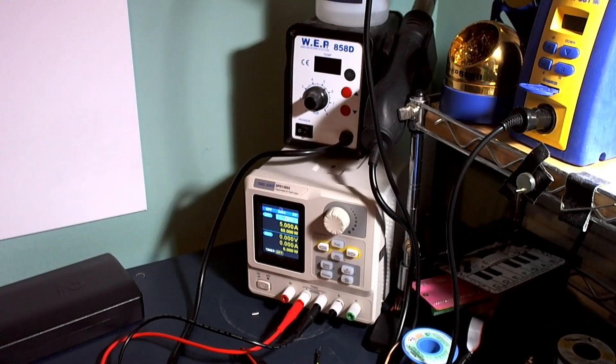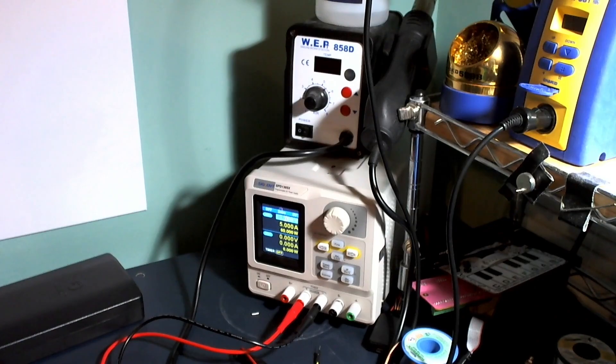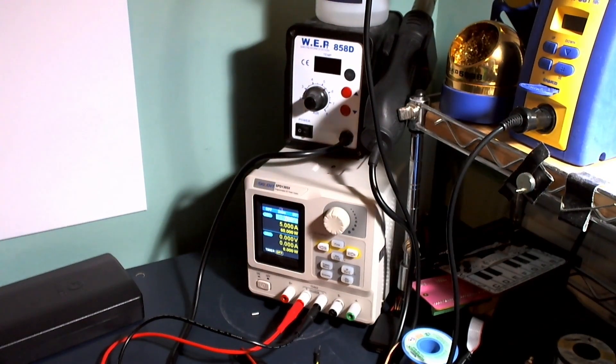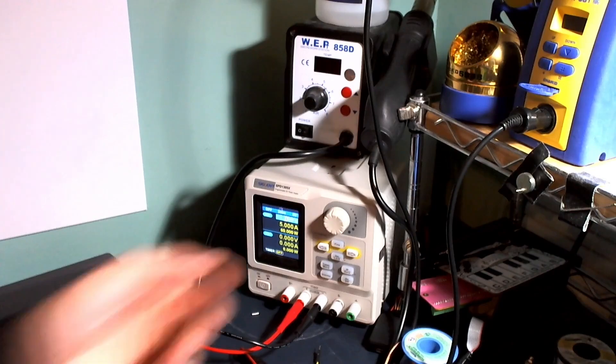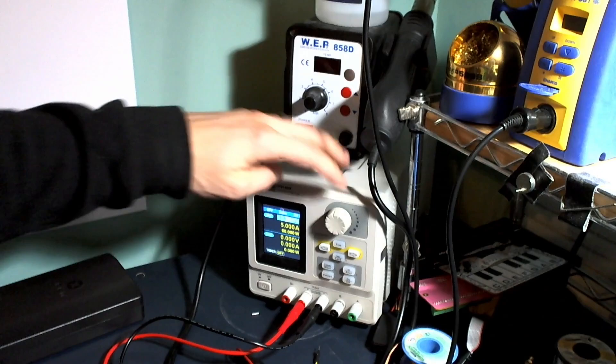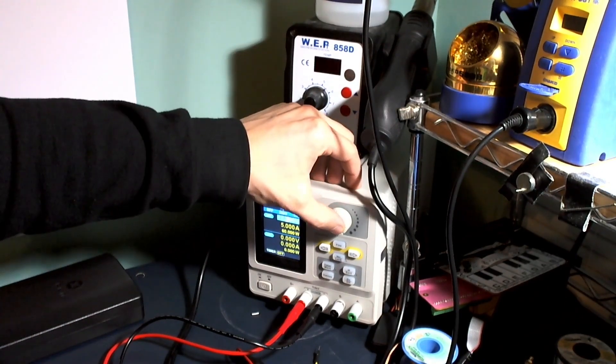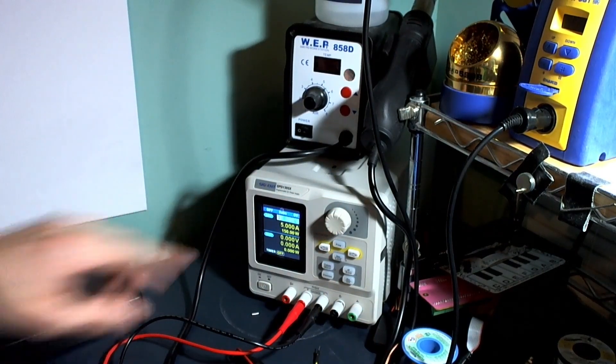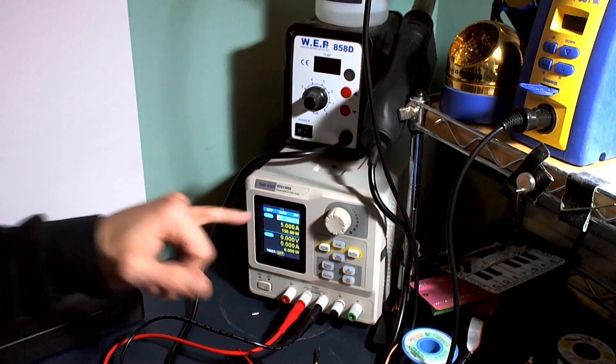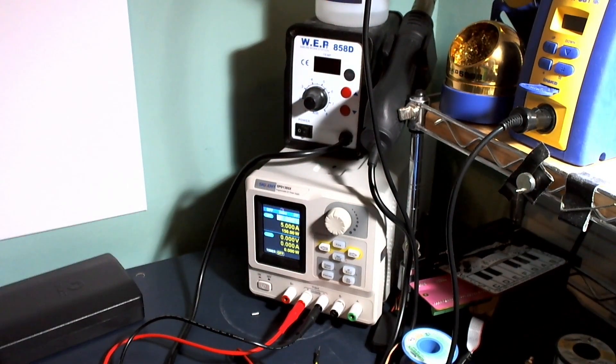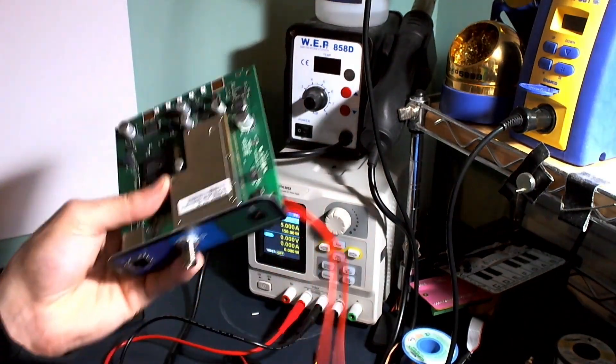I've got it on display for you right here. This is the Siglent SPD 1305X. This is a single channel power supply. This is about the best view I can get you of this unit. It has a maximum voltage of 30 volts and will do 30 volts at 5 amps. I'm going to show off just how to use this. I've got it connected to this cable modem that I've showed in a previous video.